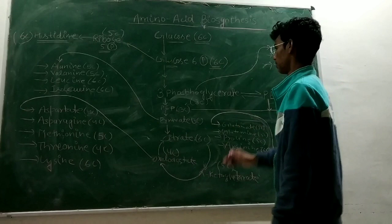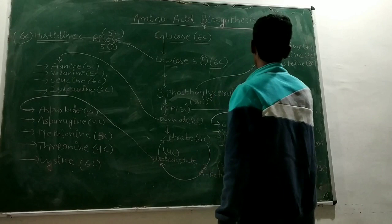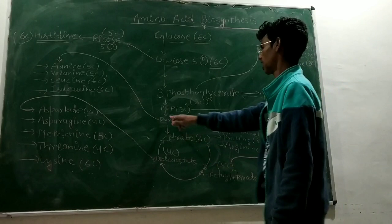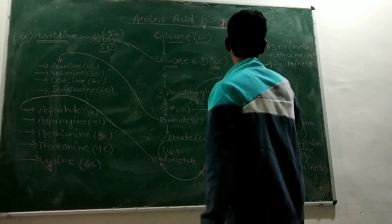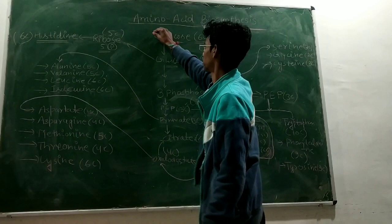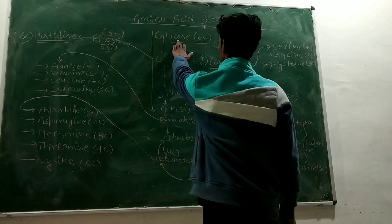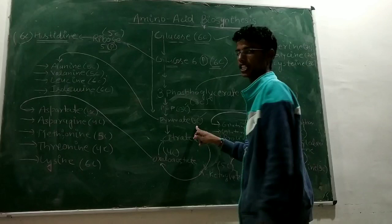Now we are going to the next step, which is 3-phosphoglycerate. This is a 3-carbon compound. This is the glycolysis step - our 6-carbon containing compound becomes a 3-carbon containing compound.